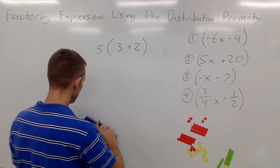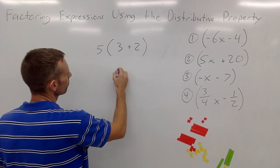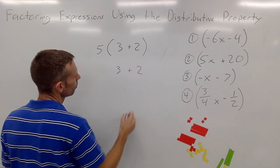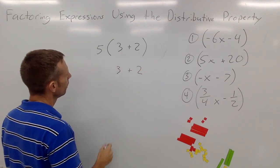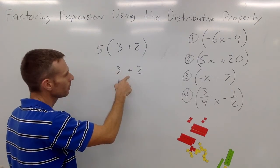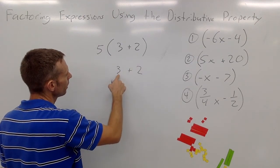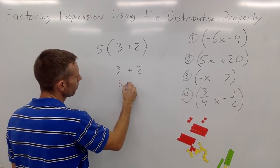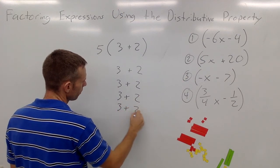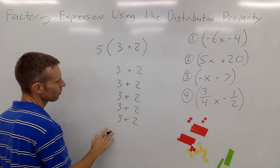We can also show that five times three plus two means I have three plus two and then I have five of these. So five times three plus two means I have three plus two, three plus two, three plus two, three plus two, and three plus two — that's five times three plus two.